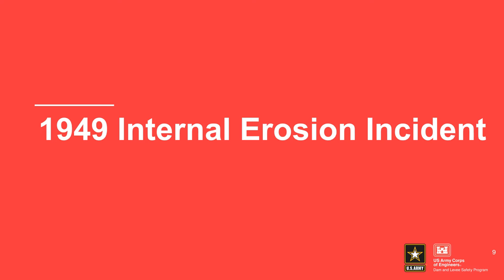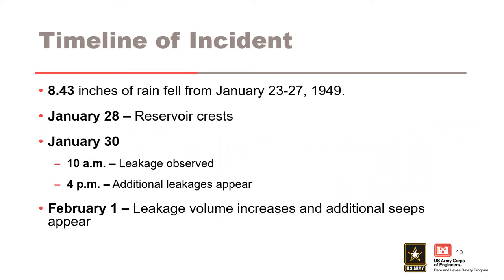Now let's talk about the 1949 internal erosion incident that immediately followed construction. From January 23 to 27, 1949, 8.43 inches of rain fell in the watershed. On January 28, 1949, the reservoir crested at elevation 493.5, about 50% of the embankment height after significant rainfall in the upstream basin, remained there for 12 hours and then slowly began to fall. Two days later, leakage was observed in the morning at station 9+09 on the downstream slope, approximately five to ten feet above the downstream toe, and a number of leaks developed later in the afternoon from station 4+00 to 10+00 with an estimated flow of five CFS.